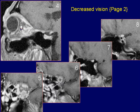Oblique sagittal post-GAD fat saturation T1-weighted image of the left orbit shows peripheral enhancement of the lesion.